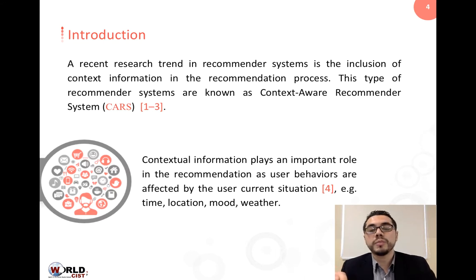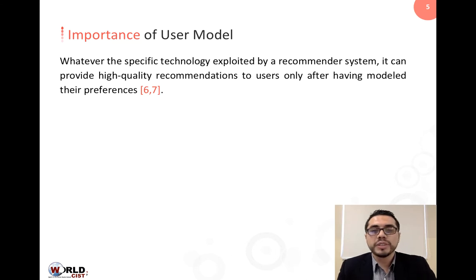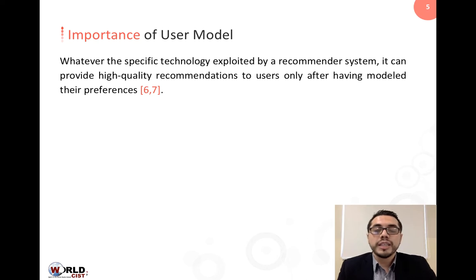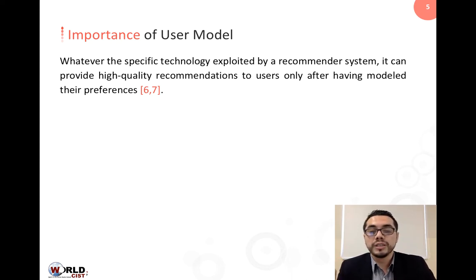Contextual information plays an important role in recommendations, as user behaviors are affected by the current situation — like the time, the location, the mood, or the weather. Whatever the specific technology or algorithm used, a recommender system can provide high-quality recommendations after modeling the user preference. Therefore, in CARS, a user model is an essential component used to store the information that will later be used by the algorithms.